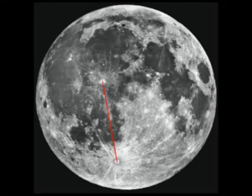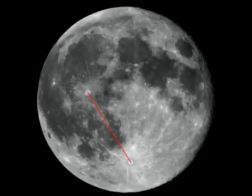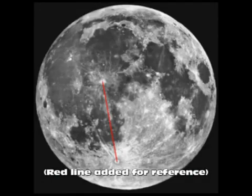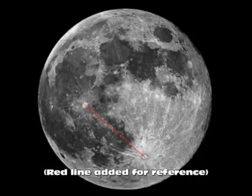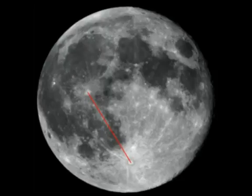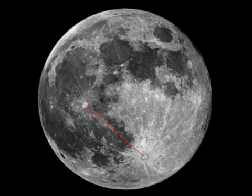Hello, in this video we're going to look at the claims made in many YouTube videos that the moon has strangely tilted or rotated on its axis in a way that it should not be. This is explained quite simply when we consider that the moon rises in the east, travels across the sky and sets in the west. In the northern hemisphere the moon will cross over in the southern sky, and in the southern hemisphere the moon will cross over in the northern sky.